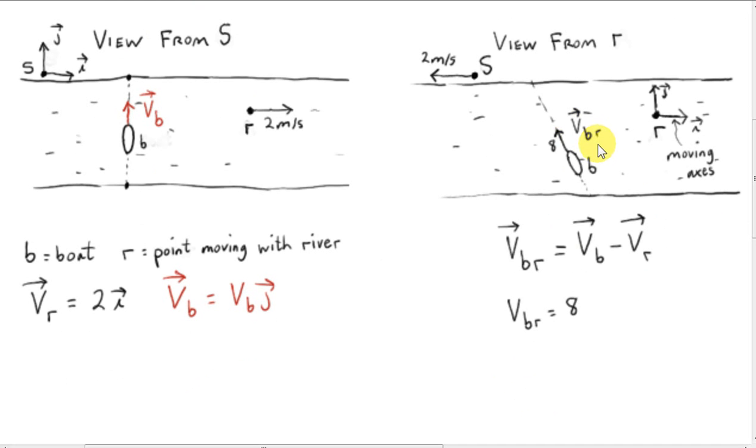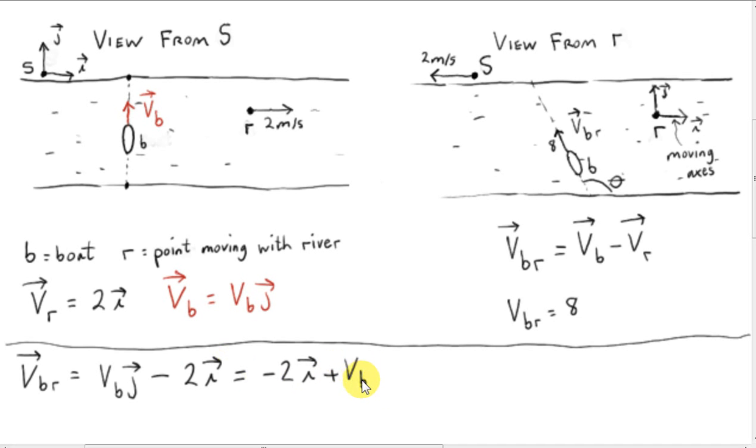Let's get vector VBR. The direction of that would include the direction of the velocity of the boat as seen from R. So that would enable us to get this angle here, which I can call theta. So VBR is vector VB, we can write that as VB times J, this vector here, minus vector VR, which is 2I.